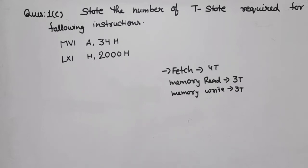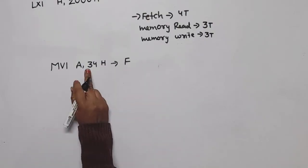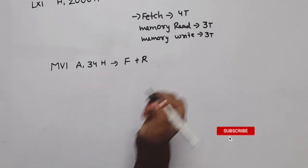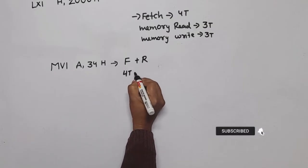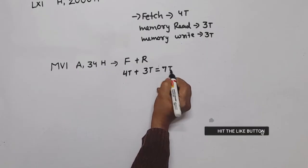Now let's take the first example, that is MVI A,34H. What is the first machine cycle? Fetch, means one fetch. Now here one byte data means one read operation. One read operation, so total T will be 4T for fetch and 3T for read, total will be 7T.